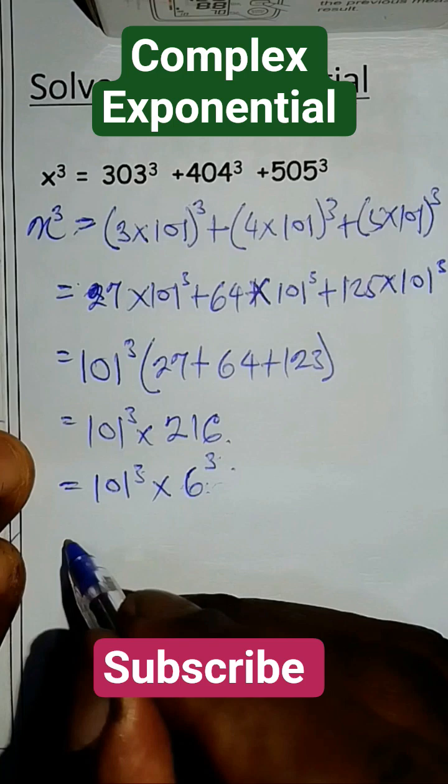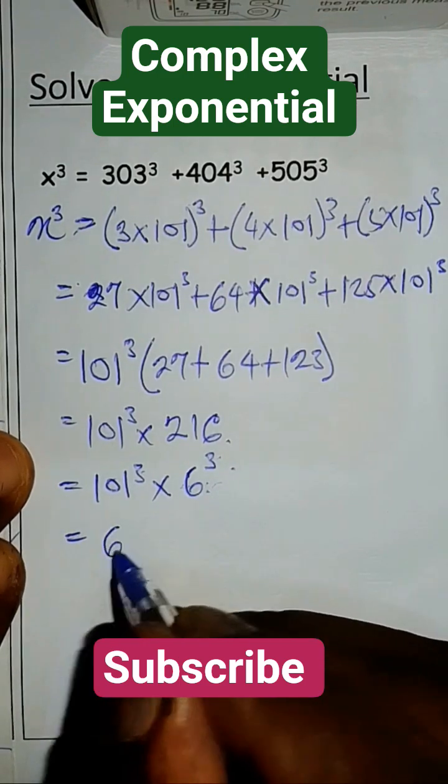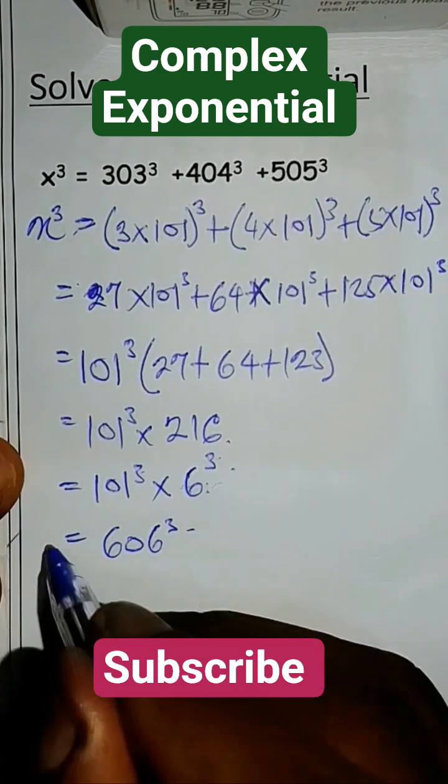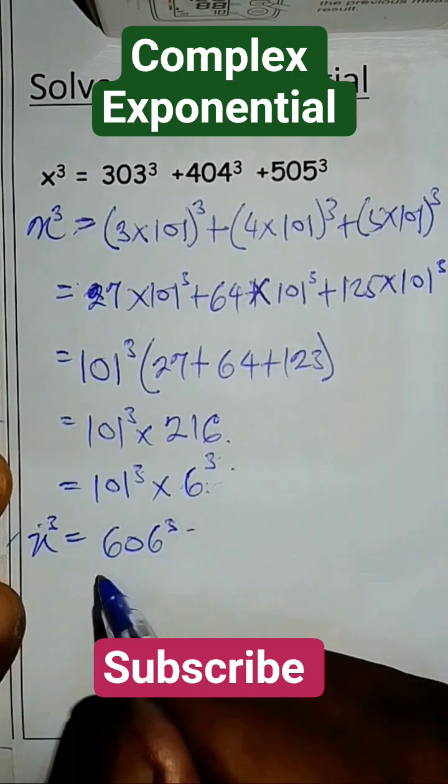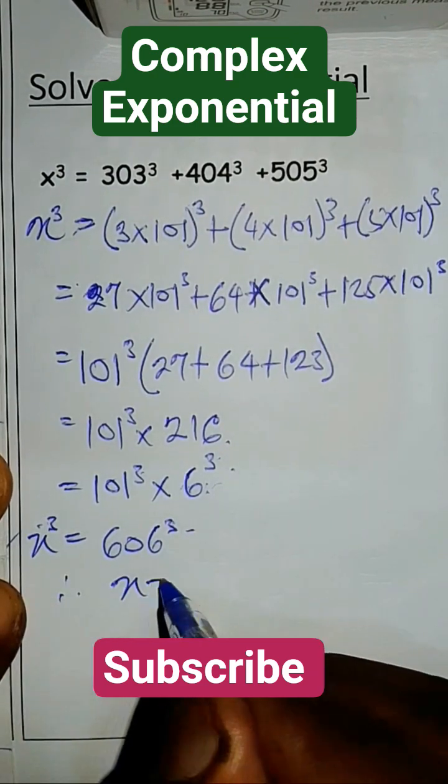So what do we have? The answer, you multiply this together becomes 606 raised to the power 3 as our x raised to the power 3. You can see they have the same power. Therefore, our x is equal to 606 as our final answer.